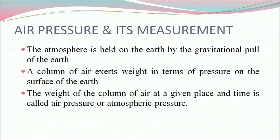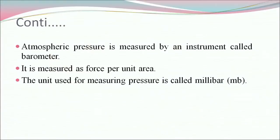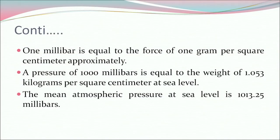Now let's begin with air pressure and its measurement. The atmosphere is held on the earth by gravitational pull of the earth. The column of air exerts weight in terms of pressure on the surface of the earth. The weight of the column of air at a given place and time is called air pressure or atmospheric pressure. Atmospheric pressure is measured by an instrument called barometer. It is measured as force per unit area. The unit used for measuring pressure is called millibar or mb. 1 millibar is equal to the force of 1 gram per square centimeter approximately. A pressure of 1000 millibars is equal to the weight of 1.053 kilograms per square centimeter at sea level. The mean atmospheric pressure at sea level is 1013.25 millibars.